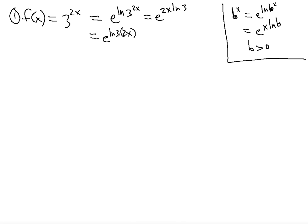So when you differentiate this function, you write the function itself — e to the ln 3 times 2x — multiplied by the derivative of the power, and the derivative of the power is going to be 2 ln 3. That's it, because the derivative of 2 ln 3 times x is going to be 2 ln 3.